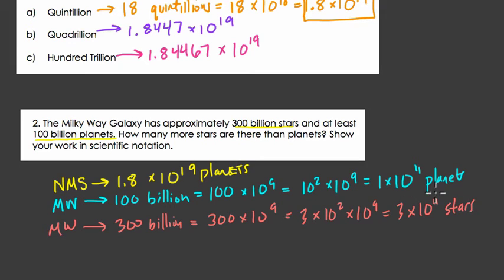To find the difference between these two, we can just subtract. If you write 3 times 10 to the 11th minus 1 times 10 to the 11th, we get 2 times 10 to the 11th.